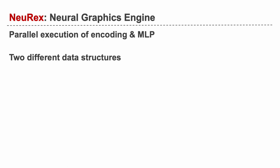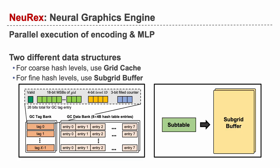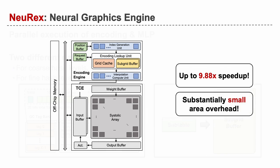On the hardware side, we propose a specialized accelerator that features a novel hashing coding engine. With restricted hashing, our accelerator performs parallel execution of the encoding and MLP stages, and it also employs two data structures to deal with different hash levels more efficiently. By extending the existing DNA accelerator with an encoding engine, Nurex achieves up to a 9.88 times speedup over the GPU with substantially small area overhead.